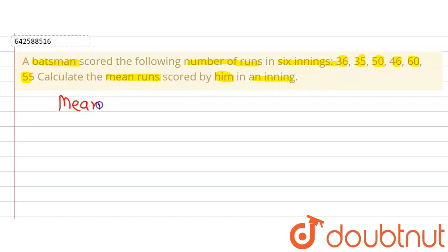Now the formula that we are going to use is: mean equals sum of observations divided by number of observations.